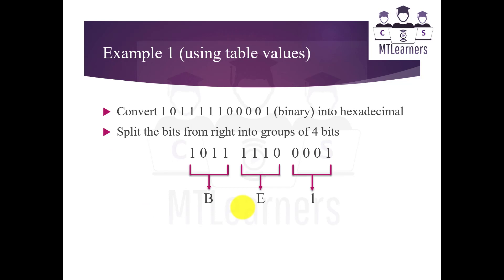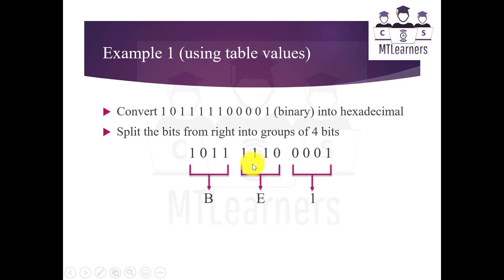Using the table values, here is an example: convert this binary number into hexadecimal. The first step is to split the bits from the right into groups of 4 bits. The groups are 0001, then 1110, then 1011. Looking at the table, 0001 is equivalent to 1, 1110 is equivalent to E, and 1011 is equivalent to B.